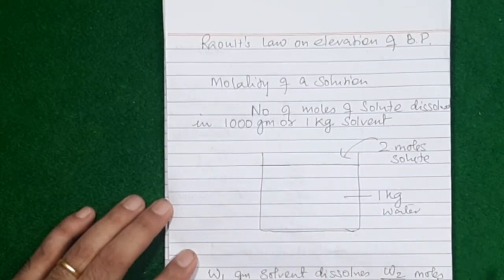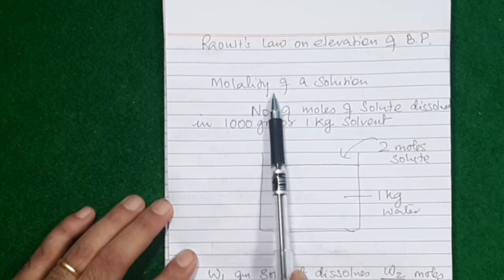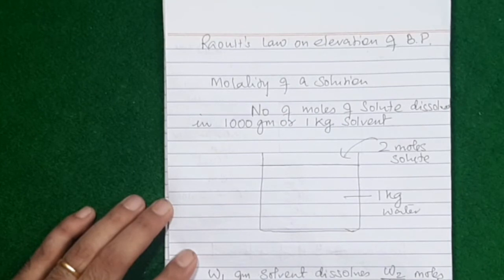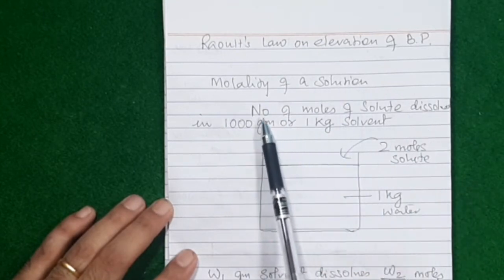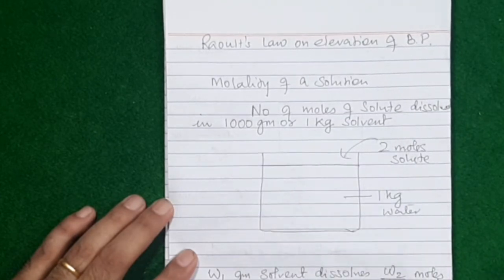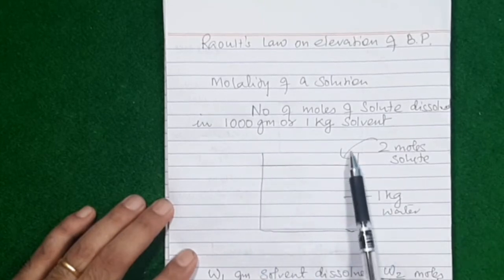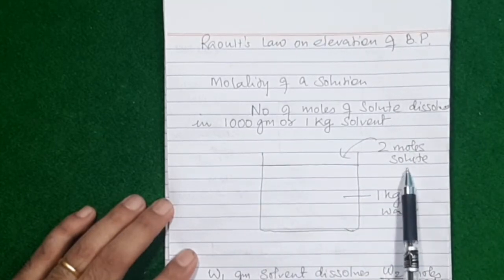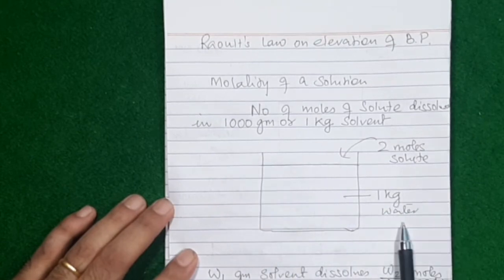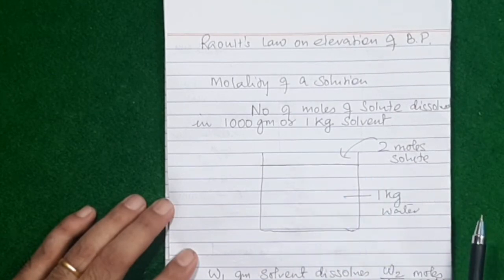Before we understand this Raoult's law, I want you to revise the concentration term called molality of a solution — it's not molarity but molality. Molality of a solution is simply the number of moles of solute dissolved in 1000 grams or one kg of solvent. For example, if you take 1 kg of water and add two moles of solute, the molality is two.